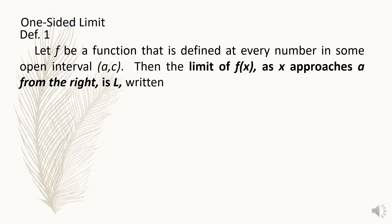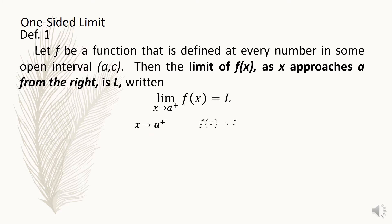Definition 1. Let f be a function that is defined at every number in some open interval AC. Then the limit of f of x, as x approaches a from the right, is L. The positive exponent indicates that the values of x are coming from the right of a. As x approaches a from the right, f of x approaches a certain value of L.